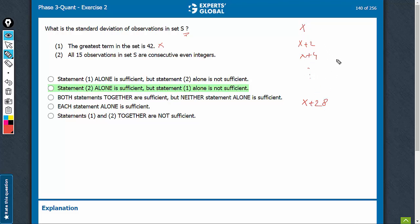The average is going to be the eighth term, x plus 14. And when you take the differences, all the x's will cancel. You will be able to find the standard deviation.